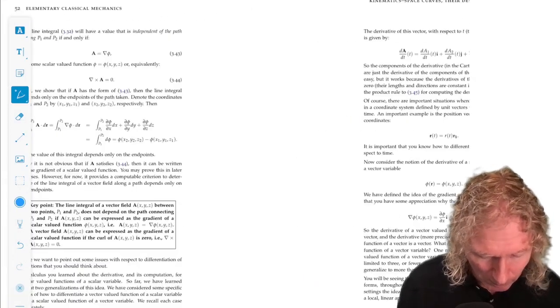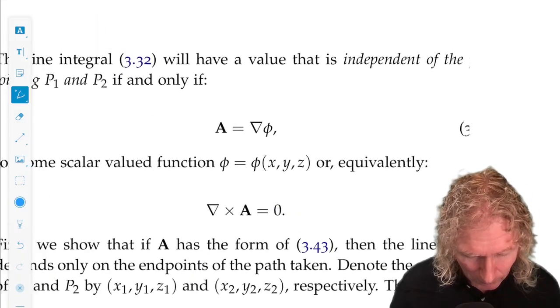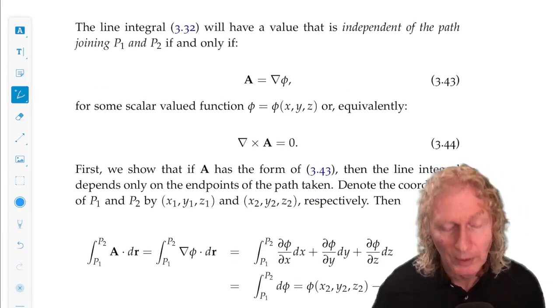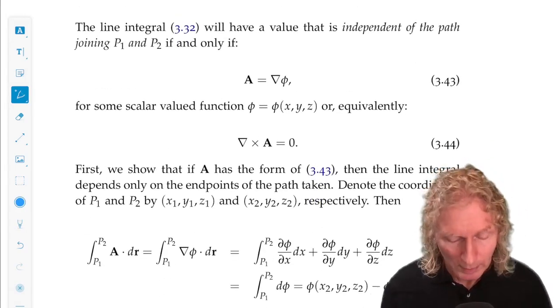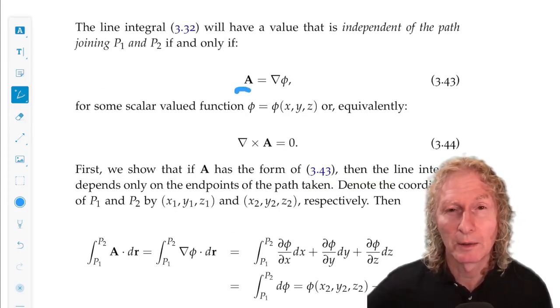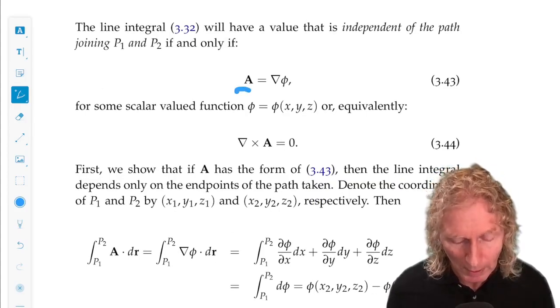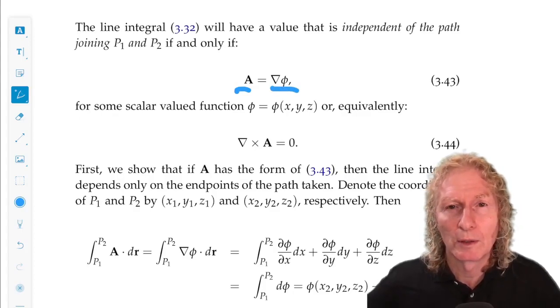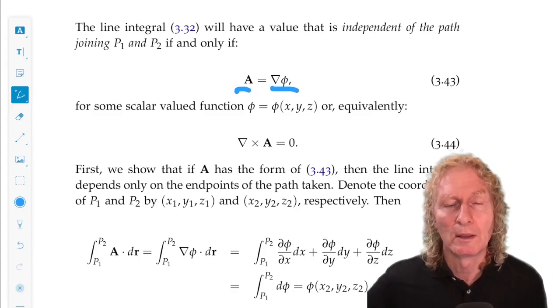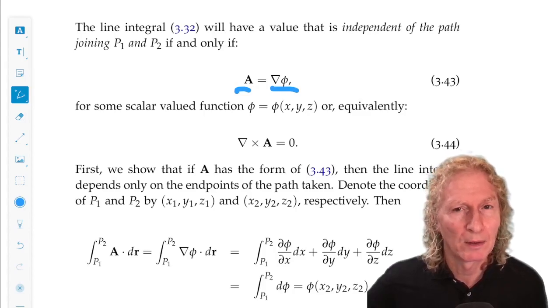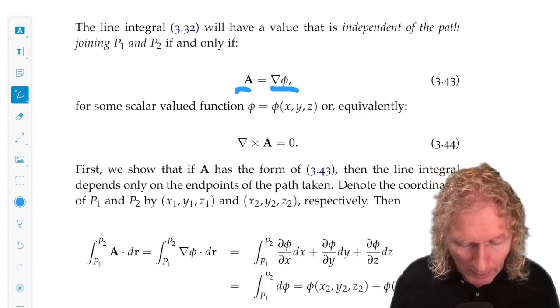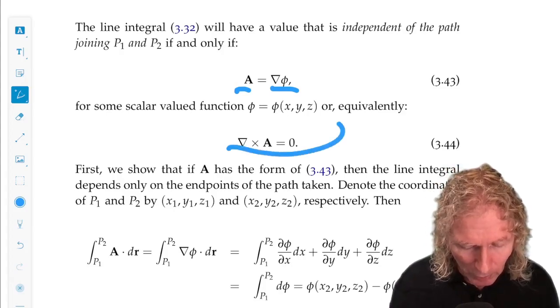Okay, let's get back to line integrals. If the vector field A involved in the line integral that we're wanting to compute is the gradient of a scalar valued function of a vector variable, then the line integral is independent of the path. Now, I still need to explain that a bit more. But if A is a gradient of phi, its curl is zero.